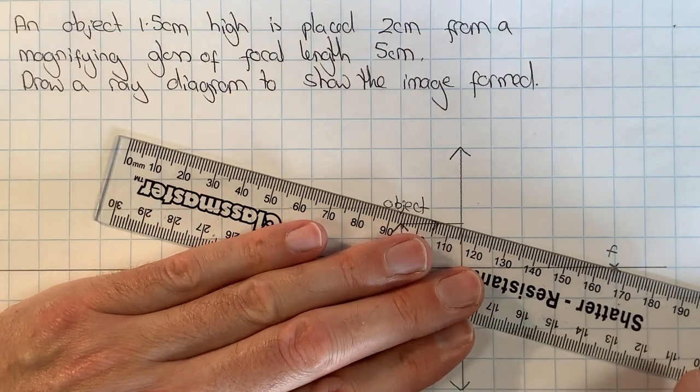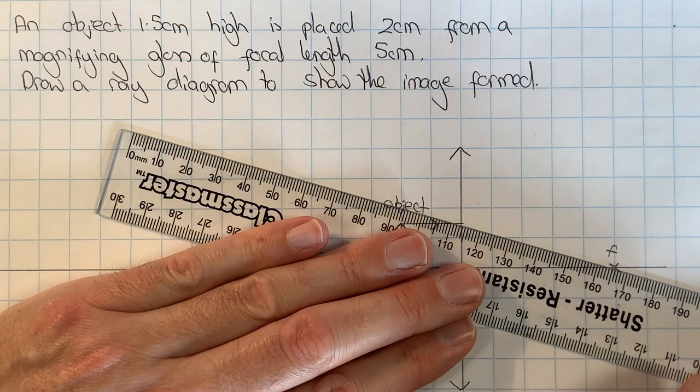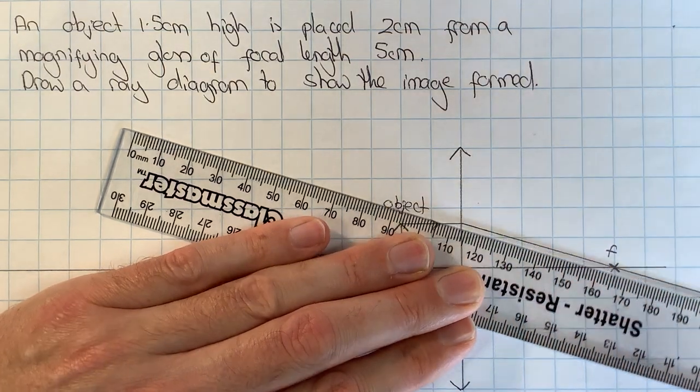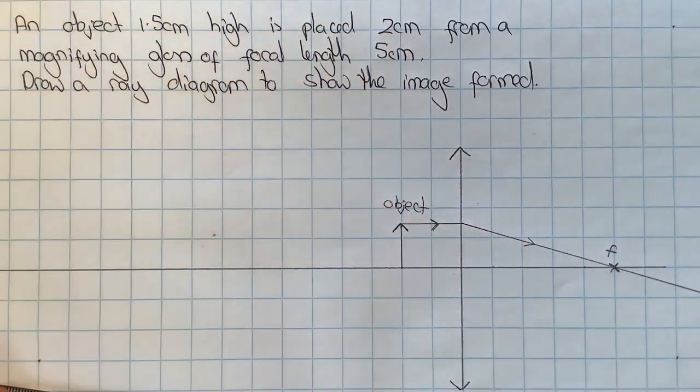It goes through the focus of the lens, which I can do by drawing it in like that. I'll put an arrow on again to show the direction it's going in.